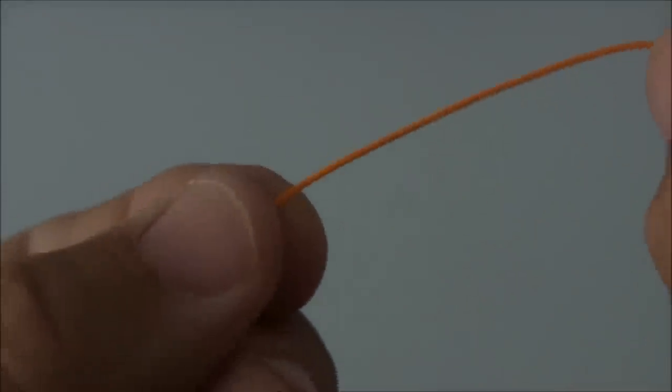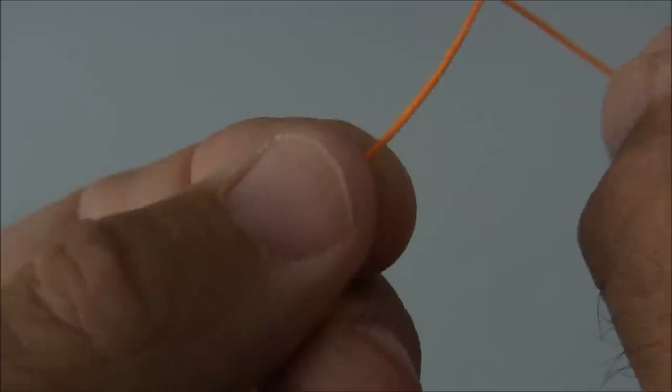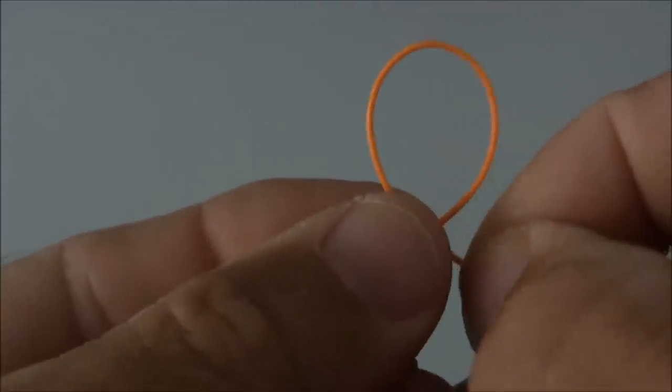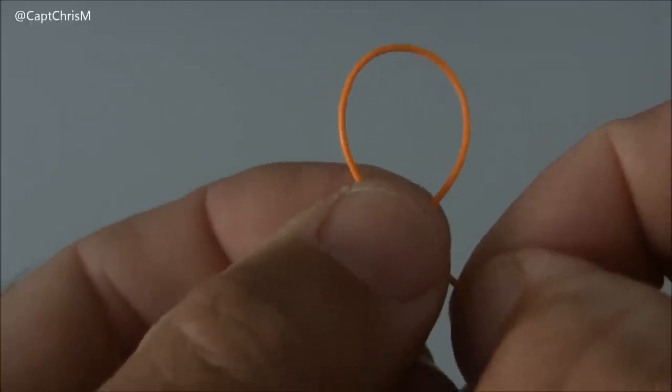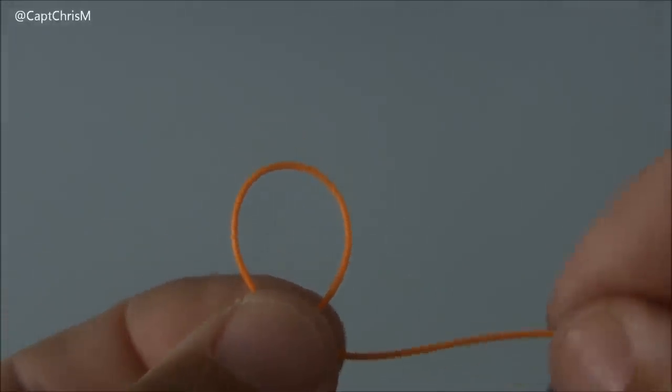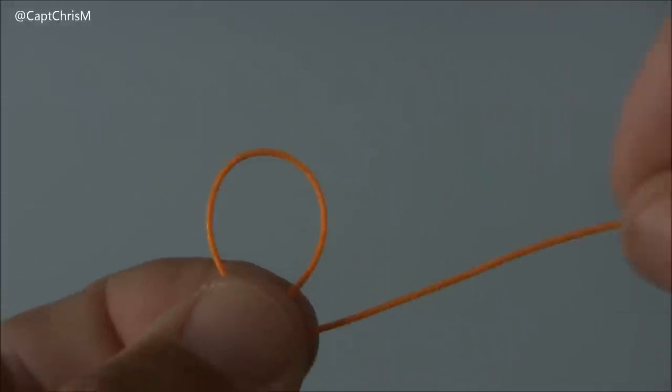We're going to take our right hand, put it behind the left, and form a loop. So right behind left it forms a loop. The next thing we want to do is come around in front of that loop with this tag end.